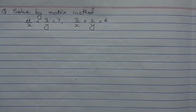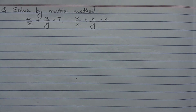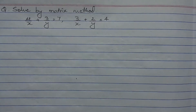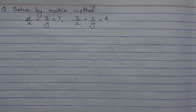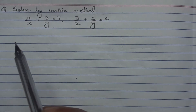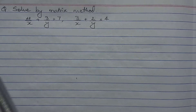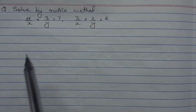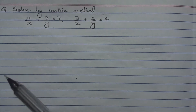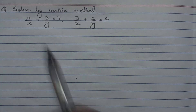This is the second type of solving the equation related to the matrix method for linear equations. The equations are: 4 upon X plus 3 upon Y equals 7, and 3 upon X plus 2 upon Y equals 4. We can see that the variables X and Y are in the form of reciprocals. For X, we can write it in the form of 1 upon X, or X to the power minus 1 — whichever you find more convenient.